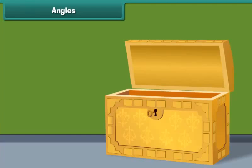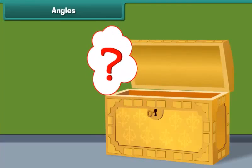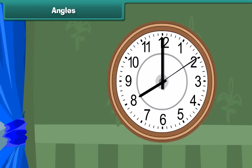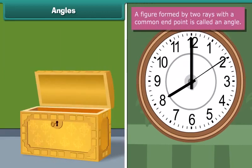Look at this box. What figure it makes? It forms an angle. Similarly, the minute hand and the hour hand in the clock form angles. A figure formed by two rays with a common end point is called an angle. An angle is represented by the given symbol.